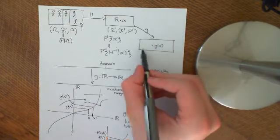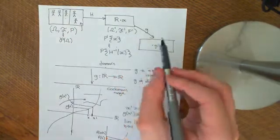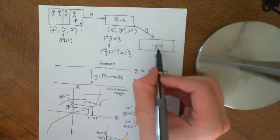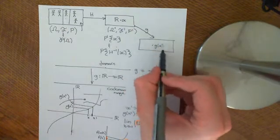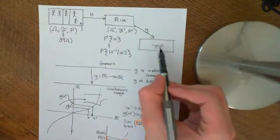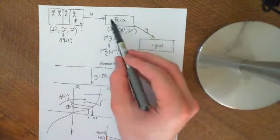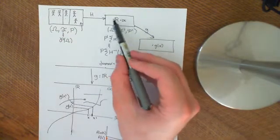And again, you want this to inherit the probability space structure of this one. So you want any event in here to have a corresponding event back here, and you want the probability of the event in this probability space to be the same as the probability of the corresponding event back here.